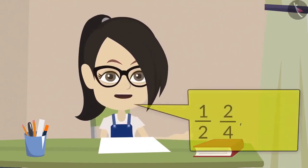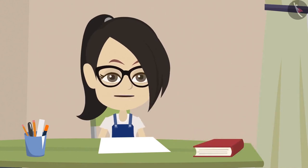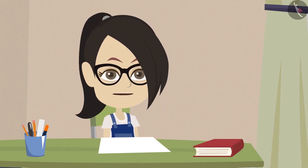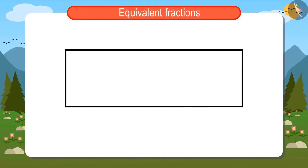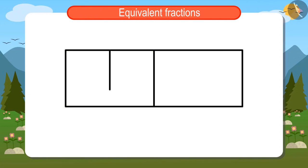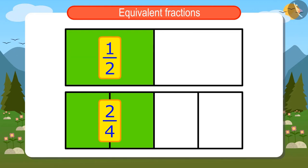Yesterday, we learned that 1 half and 2 fourths are equivalent fractions. To understand this concept well, we can draw an explanation. One half means one of the two equal parts, so I will make a rectangle and divide it into 2 — this is 1 half of it. Now, in order to find 2 fourths of this rectangle, I will divide it into 4 equal parts. Two of these 4 parts will be 2 fourths of this rectangle. Now I can say that 1 half and 2 fourths are showing the same size, so they are equivalent.